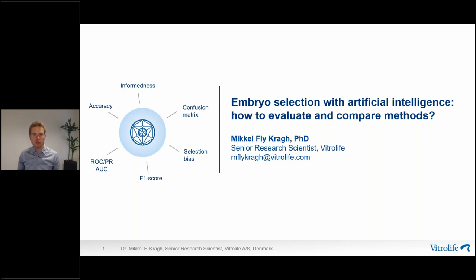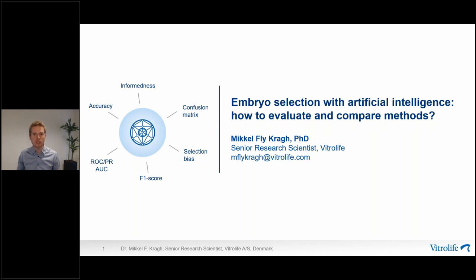In the past few years, we've seen an increasing number of studies including AI models for embryo selection. The use of AI and machine learning has introduced a new language into IVF that not only data scientists but also clinicians have to understand. This includes a variety of metrics used to evaluate model performance, such as accuracy, informedness, F1 score, and AUC. Today, I hope to demystify some of these terms and relate them to actual clinical practice.